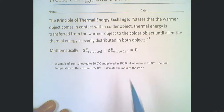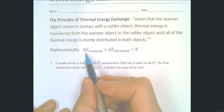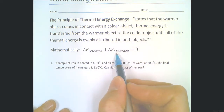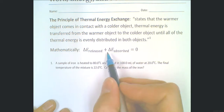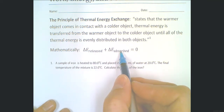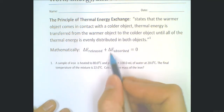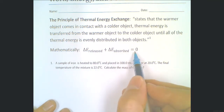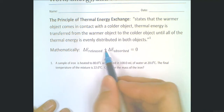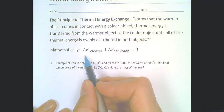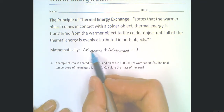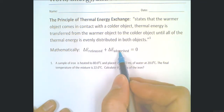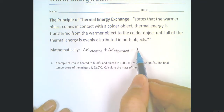Mathematically, it looks like this: ΔE released plus ΔE absorbed equals zero. So the amount of energy released plus the amount of energy absorbed will equal zero. The amount of energy released will be a negative value and the amount of energy absorbed will be a positive value, so the negative value balances out with the positive value to give you zero.